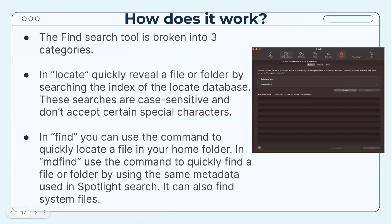The Find Search tool is broken into three categories. In Locate, you can quickly reveal a file or folder by searching the index of the locate database — these searches are case-sensitive and don't accept certain special characters. In Find, you can use the command to quickly locate a file in your home folder. In Find (with metadata), you can quickly find a file or folder using the same metadata used in Spotlight search, and it can also find system files.